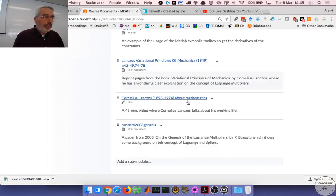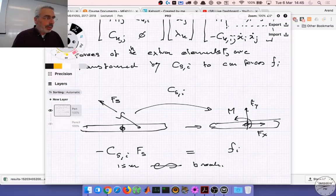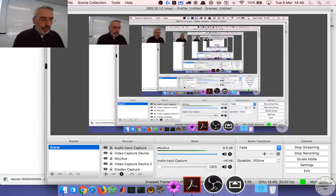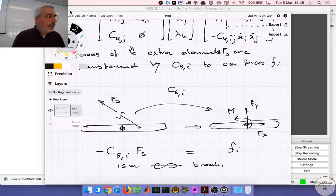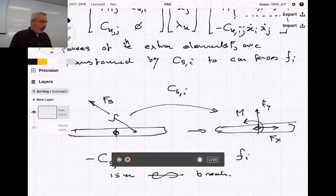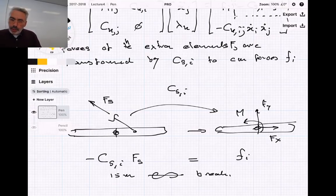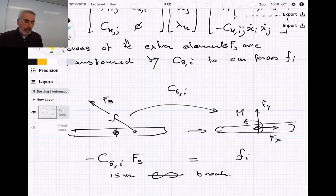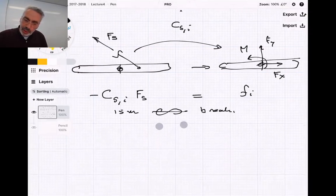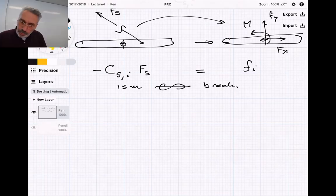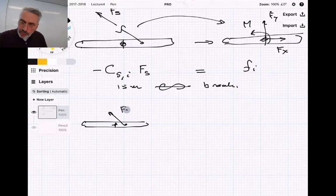Back to where we were. Let's again look at the problem. So we have this bar, and we have at this attachment point this Fs.